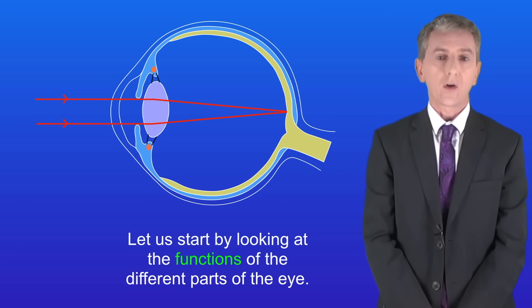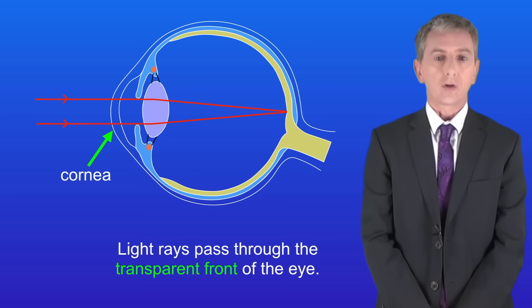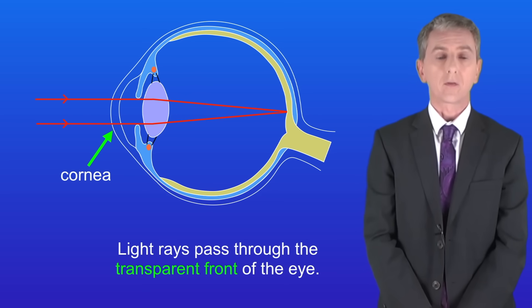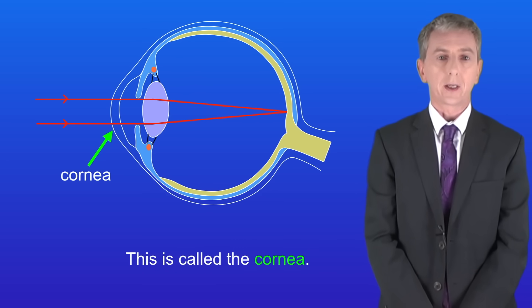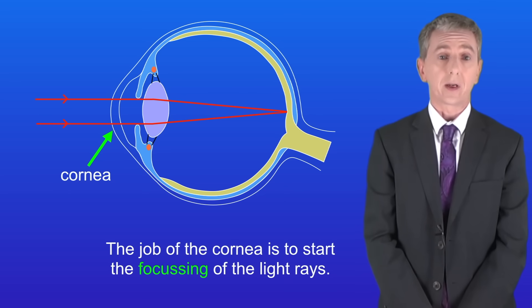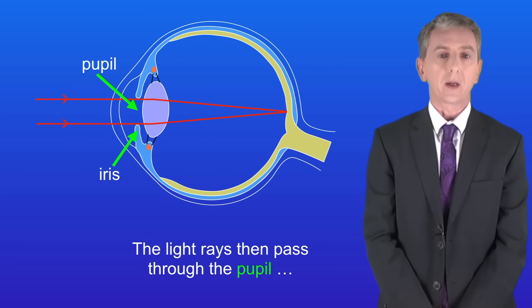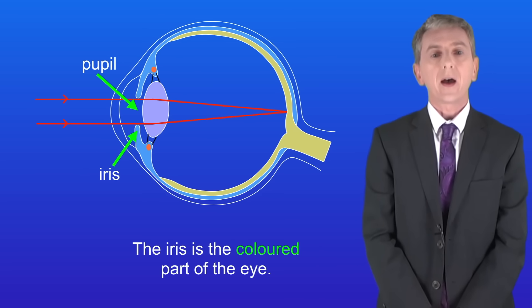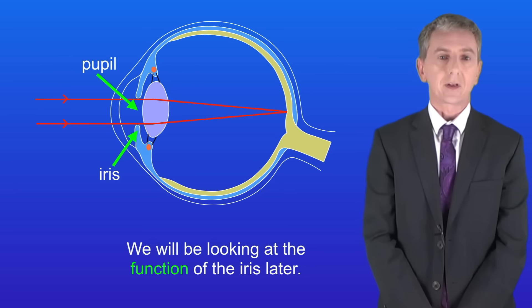Okay so let's start by looking at the functions of the different parts of the eye. Light rays pass through the transparent front of the eye and this is called the cornea. The job of the cornea is to start the focusing of the light rays. The light rays then pass through the pupil in the centre of the iris. The iris is the coloured part of the eye and we'll be looking at the function of the iris later.